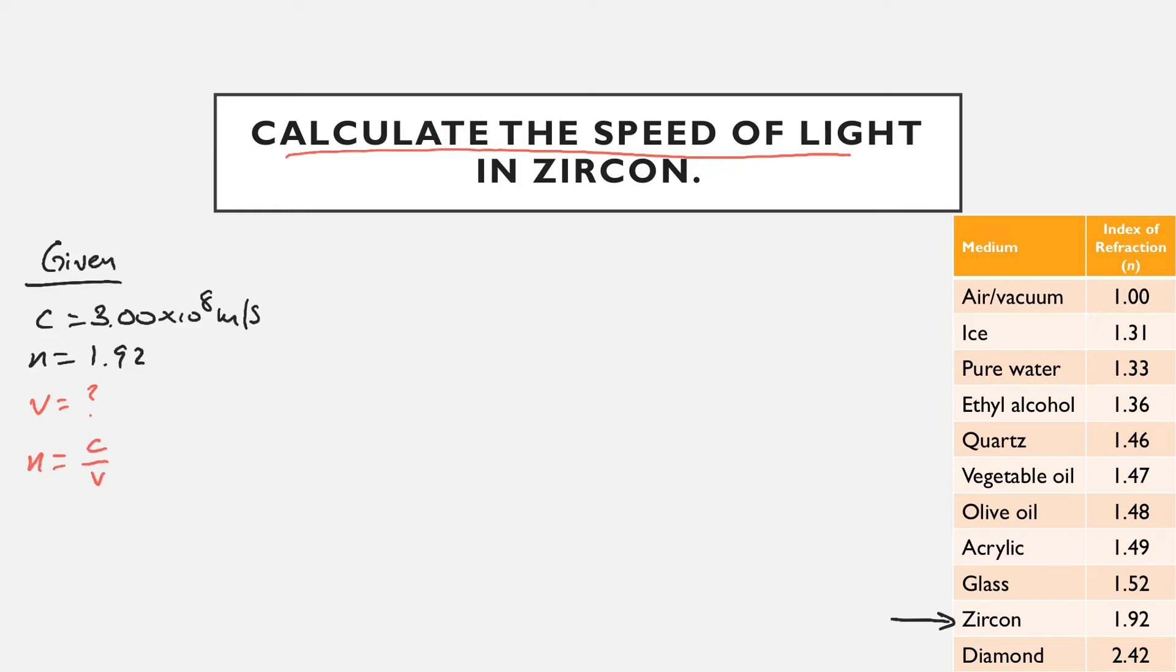And note that we can't use this in the form that it's given. So if we rearrange this, do a little bit of algebra, we end up with v equals c over n. This equation we can use because v is on the left side. So let's rewrite that one last time. Plug in our known values. 3 times 10 to the 8 divided by 1.92 is going to give us a final result of 1.56 times 10 to the 8 meters per second.